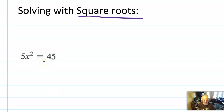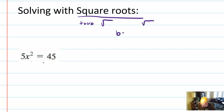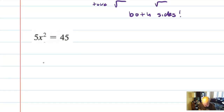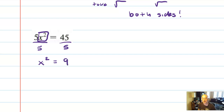If you have an equation, there are a lot of things you're allowed to do — you can do anything you want to the left side and the right side, and that includes taking the square root of both sides. So if we have 5x² = 45, isolate the x squared term: 45 over 5 is 9. Now take the square root of both sides, and we get x equals positive or negative 3.